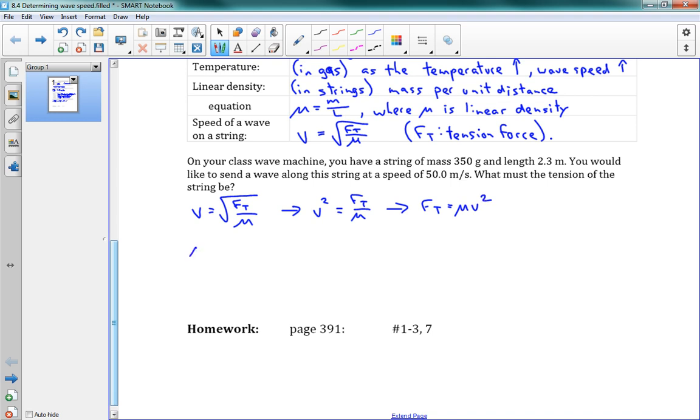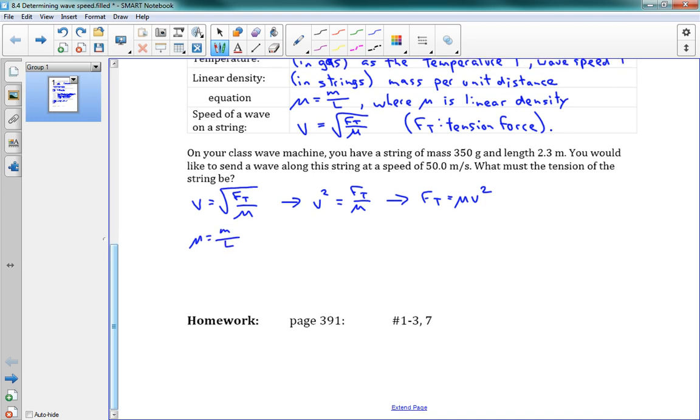Okay. Now, the next piece we have here is that mu is equal to M over L. So, we can put that all together to say that my Ft is going to equal, we've got M V squared over L. So, we're going to have my mass is 0.35, my V is 50, I want 50 meters per second squared and I divide that by the length 2.3 meters, and this gives me a final answer of 380 newtons and that's what the tension should be.